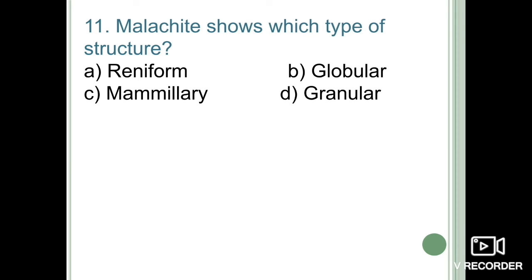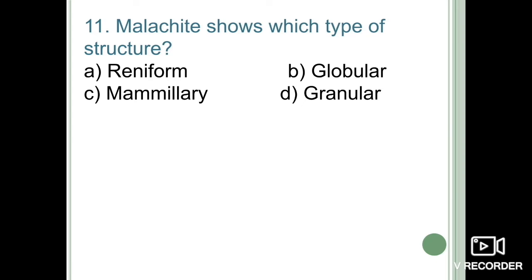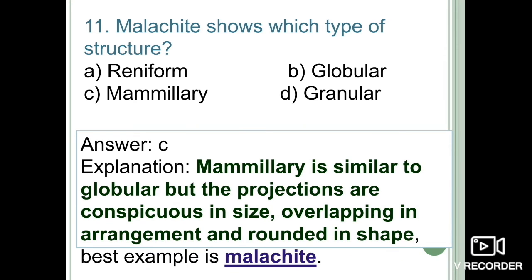Next question: malachite shows which type of structure — reniform, globular, mammillary, or granular? Mammillary is similar to globular in structure, but the projections are conspicuous in size, overlapping in arrangement, and rounded in shape. This differentiates mammillary from reniform and globular structures. The best example of mammillary form is malachite. The correct option is option C: mammillary form.